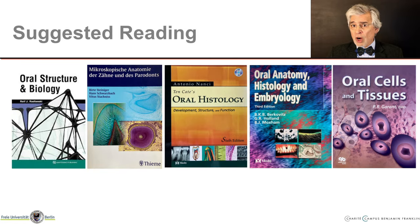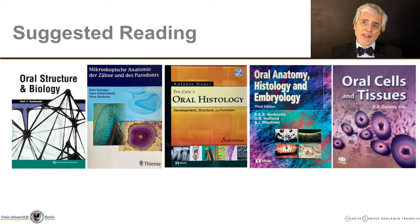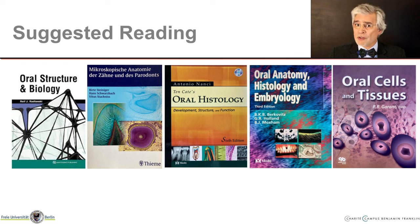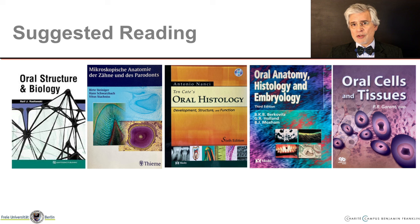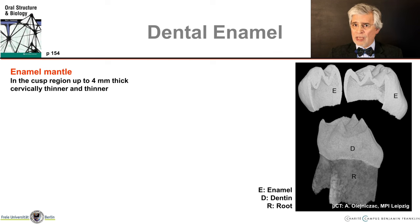There are a lot of good textbooks on this topic. You can find all the content I address in this lecture in my textbook, Oral Structure and Biology, which is why I always include the page numbers on the top left-hand corner. So now let us begin with dental enamel. The crown of the tooth is made of enamel, and this is what we see of the teeth when we look into the oral cavity.